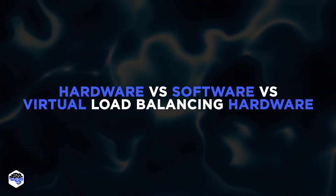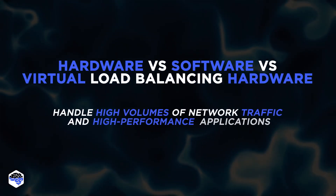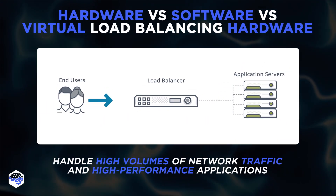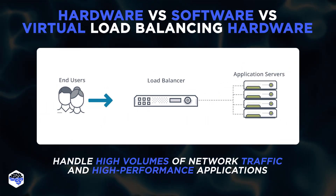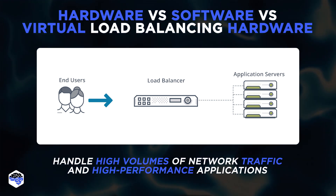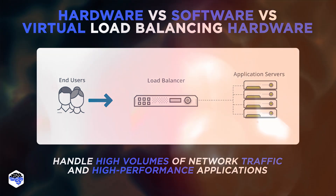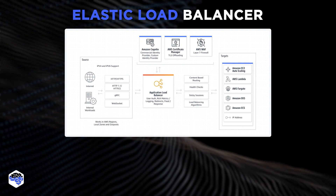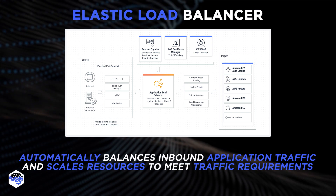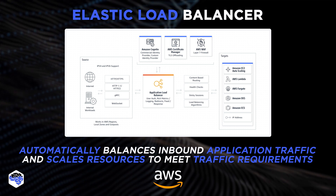Hardware load balancing subsystems handle high volumes of network traffic and high-performance applications, and can contain embedded virtualization that brings together multiple instances on a single device. Software load balancers can be deployed in the cloud and provide a cost-effective alternative to hardware counterparts. The Elastic Load Balancer automatically balances inbound application traffic and scales resources to meet traffic requirements as a load balancing service for Amazon Web Services deployments.